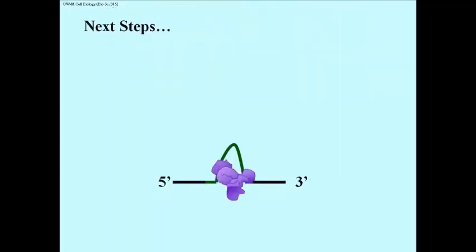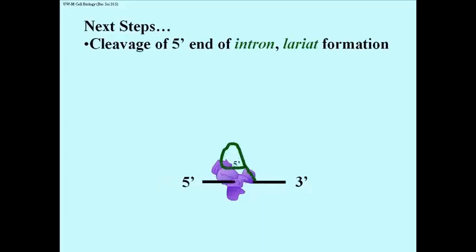The next step is cleavage of the 5' splice junction and the formation of a bond between the 5' G of the intron with the branch site adenine nucleotide to form a lariat-like structure shown here.